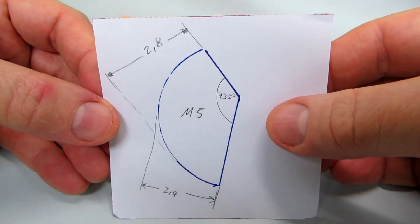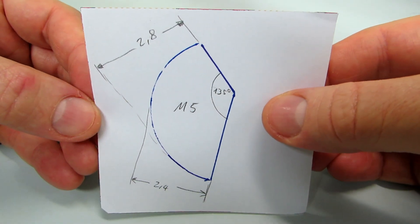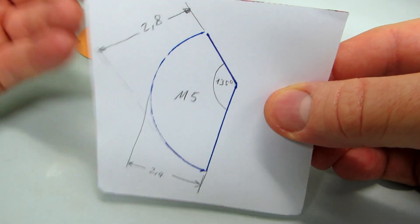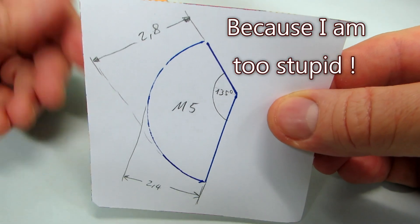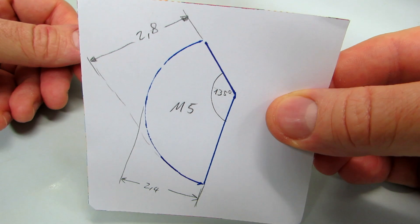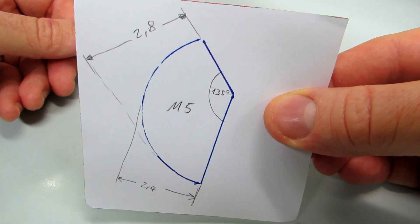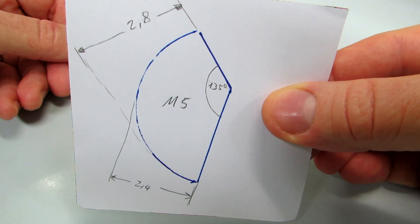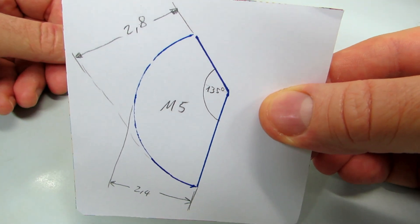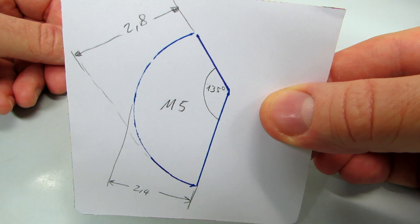Here are the dimensions that worked for an M5 thread. I figured it out, I didn't calculate it. If you're a mechanical engineer or otherwise clever, please calculate the dimensions for the optimum clamping effect, and add a note in the comments.